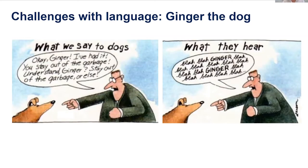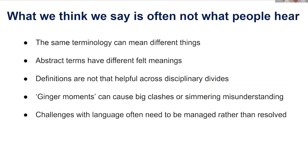Thinking about challenges with language — this is a Far Side cartoon. On the left-hand side, you've got what we say to dogs: 'OK Ginger, I've had it. You stay out of the garbage. Understand, Ginger, stay out of the garbage or else.' And on the right, what they're hearing: 'blah blah blah blah blah, Ginger, blah blah blah, Ginger.' The reason I love this cartoon is it captures something which we like to think doesn't happen between people, but actually happens all the time. What we think we say is often not what people hear, and particularly what we want to be saying is often not what people hear. This is because the same terminology can mean different things in different disciplinary groups.